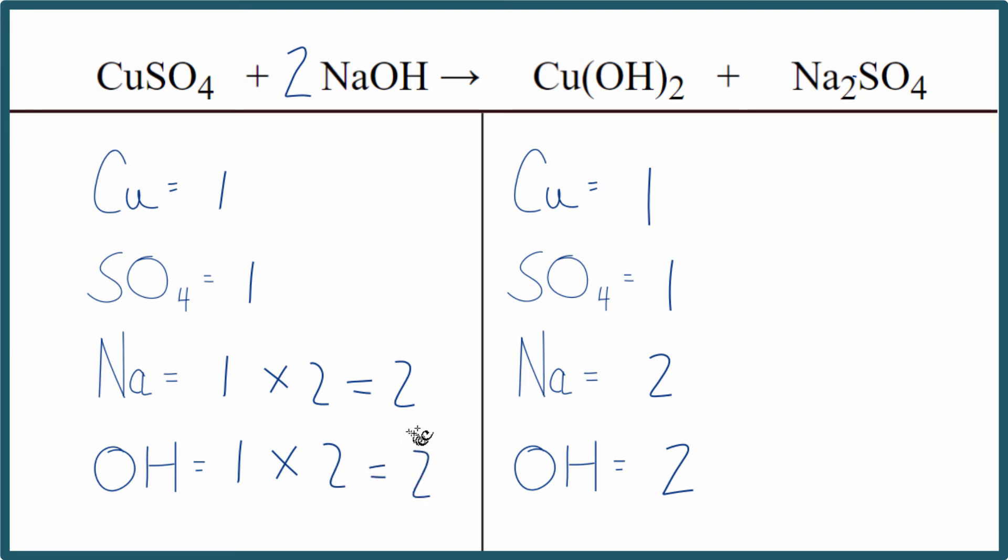So either way, you're going to get the same answer, but by considering these polyatomic ions as one thing, if they appear on both sides, it's a lot easier, and you're a lot less prone to make errors. This is Dr. B, the balanced equation for CuSO4 plus NaOH, copper 2 sulfate plus sodium hydroxide. Thanks for watching.